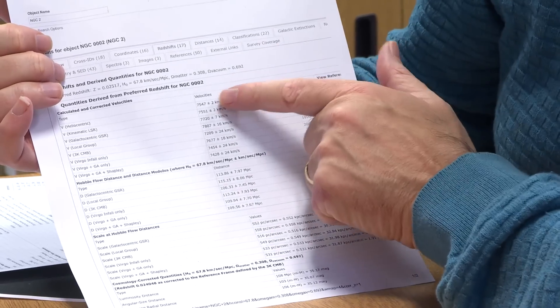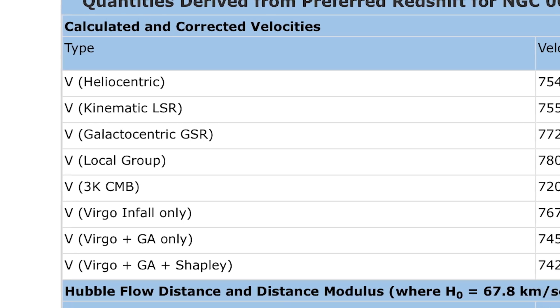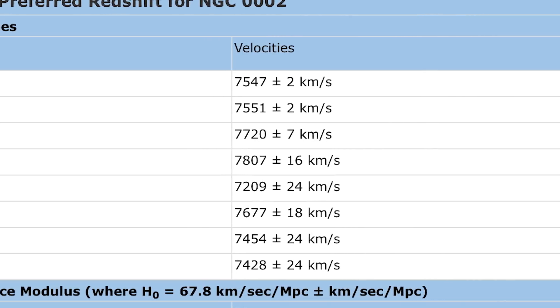Sounds like problem solved! And in fact here are the numbers for NGC 2. The measurement of its redshift turned into a velocity is a bit over seven and a half thousand kilometers per second. You can turn that into a distance and you get 114 million parsecs away. The relationship between velocity and distance is the Hubble law, and the constant between them is Hubble's constant. You also have to correct for other things — the Earth going around the Sun, the Sun going around the galaxy, the galaxy moving relative to the cosmic microwave background — those all add velocities. The corrected numbers shift from about 7,500 to about 7,200 km/s, which makes a little bit of a difference but not a huge one.